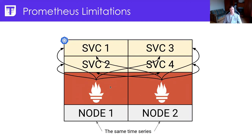In the vanilla Prometheus world you would solve this problem by scraping the same metrics from one or more Prometheus instances. But that has its own downsides — for example, the same time series would be stored on both nodes, meaning duplicated data, and you would have to retrieve two times more data when querying. And what if some Prometheus instances can't scrape one or more services? That's a very bad situation.